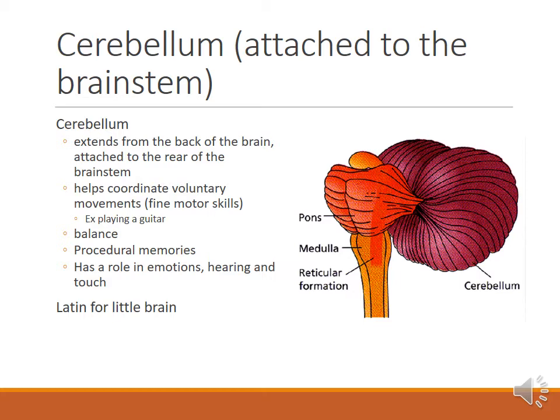The cerebellum also deals with our sense of balance — tied in with our vision and other senses to understand where our horizon is. It's also where procedural memories exist. Procedural memories are our 'how to do something' memories. Could you close your eyes and tie your shoelaces? If yes, you have good muscle memory or procedural memory for that activity. Memory doesn't exist in your muscles — the more you build neural connections in your cerebellum for a physical activity, the stronger you become. The cerebellum also has a role in emotions, hearing, and touch.